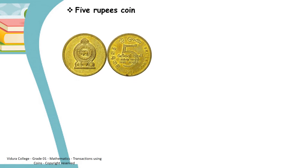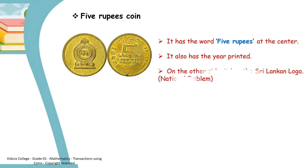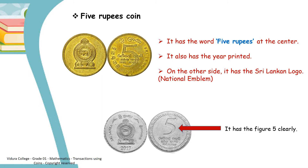Ok. Let's see what's the next coin. It's five rupees coin. Look at this coin also. It has the word five rupees at the center. It also has the ear printed. On the other side, it has the Sri Lankan logo. And also it has the figure five clearly.